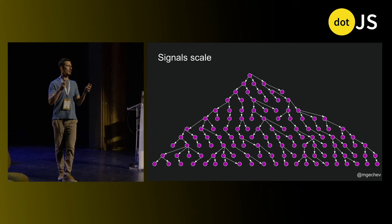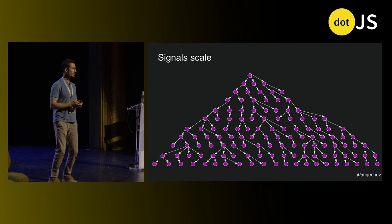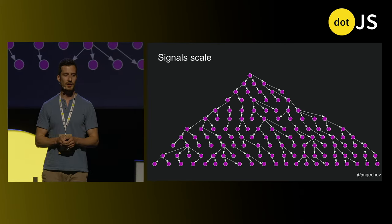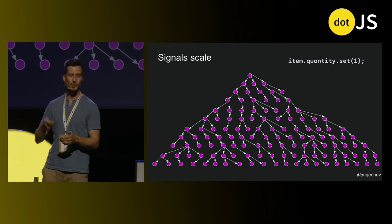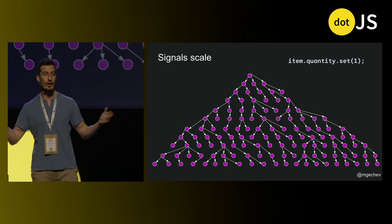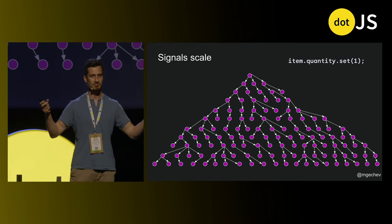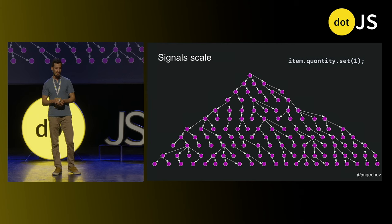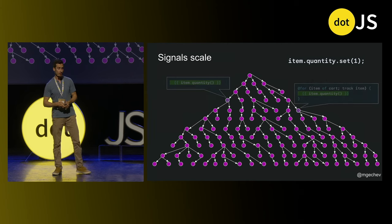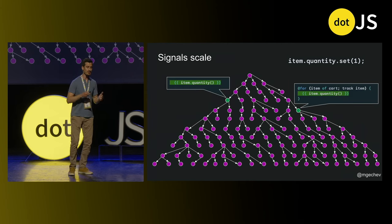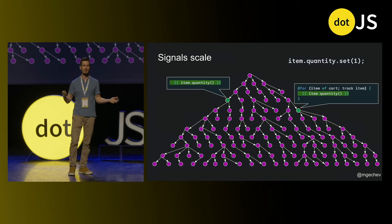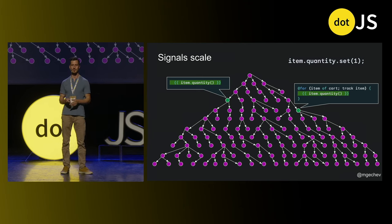Looking at our larger component tree, if we have a signal item.quantity read in different parts of the tree, when we update it, we go only to the affected components and update their corresponding views without traversing the entire data structure.